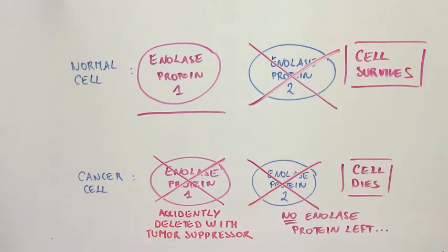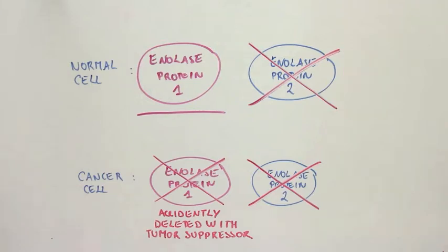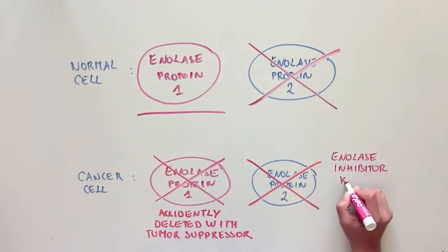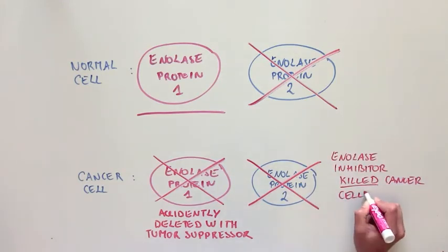This is very theoretical, so the authors wanted to see if it is possible to specifically kill cancer cells by blocking or removing another member of the anylase family. And this is actually exactly what they found. The cancer cells that had accidentally deleted a member of the anylase family, along with the tumor suppressors, died after treatment with an anylase inhibitor, whereas the normal cells did not.